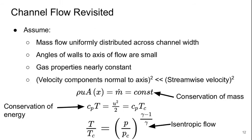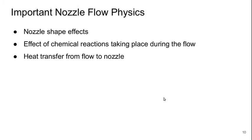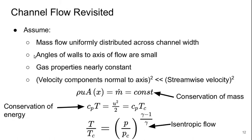So this is essentially channel flow being revisited. So we're going to assume that the mass flow is uniformly distributed across the width of the channel, that the angles of the wall to the axis of the flow are small. That means essentially that the nozzle is long. The gas properties are constant or nearly so. And that, and this is a direct consequence of the second point, is that the velocity components normal to the axis, or specifically the square of the velocity components normal to the axis, is much smaller than the square of the streamwise velocity. This is essentially required for us to be able to consider the flow to be quasi one-dimensional.